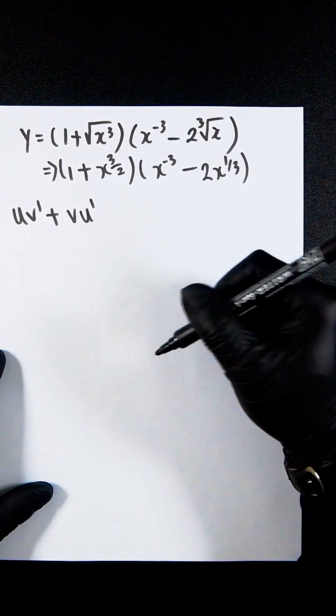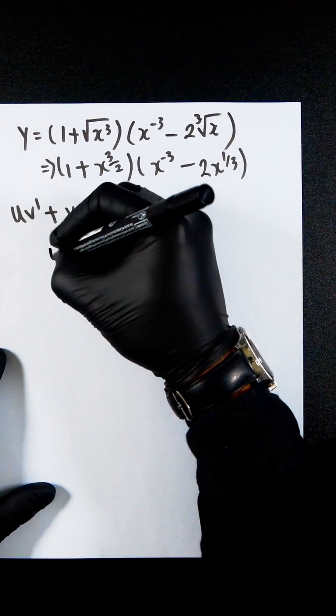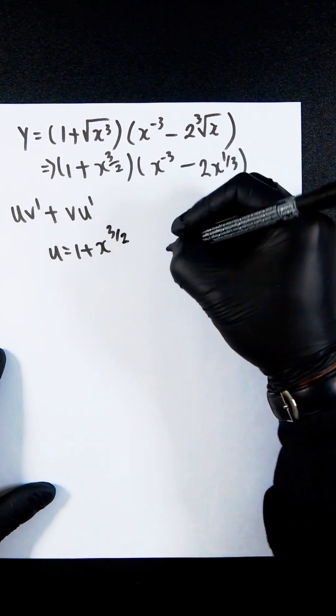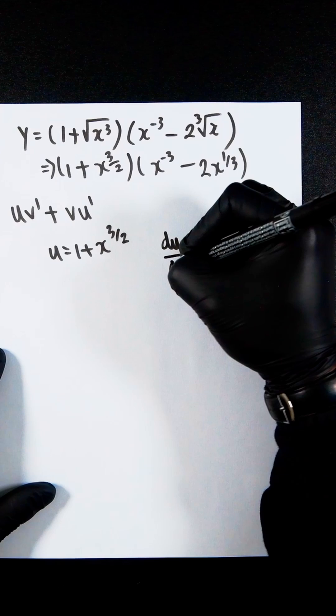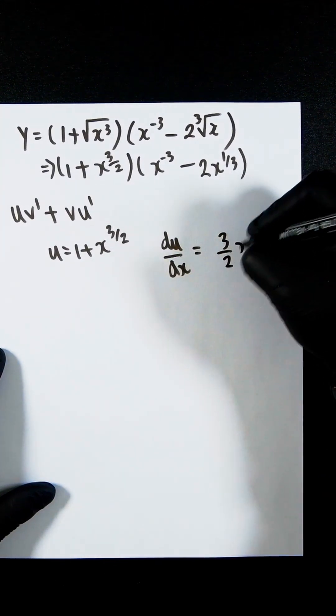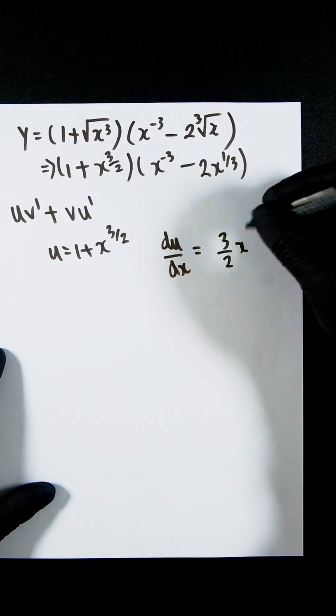Using this formula, we can now find out that u is 1 plus x to the power of 3 over 2. So du dx would then be 3 over 2 x to the half.